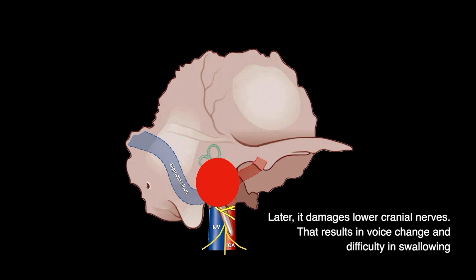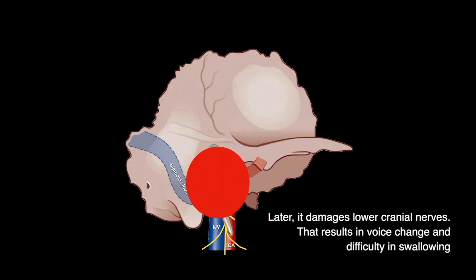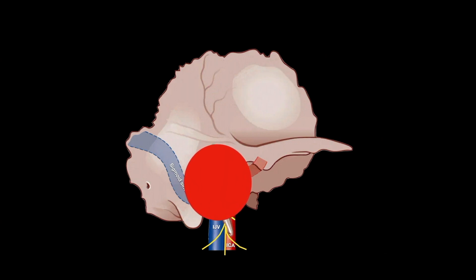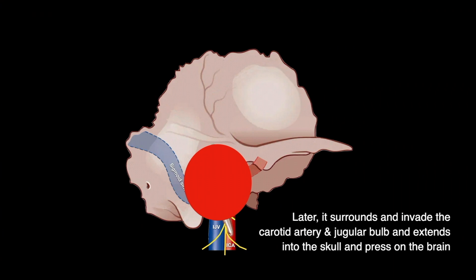Later, it damages the lower cranial nerves, resulting in voice change and swallowing difficulty. Further progression involves the tumour surrounding and invading the carotid artery and jugular bulb, extending into the skull and pressing on the brain.